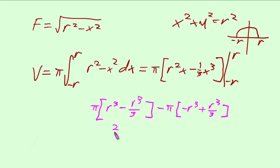See, this all equals two-thirds r to the third. This all equals negative two-thirds r to the third negative, plus